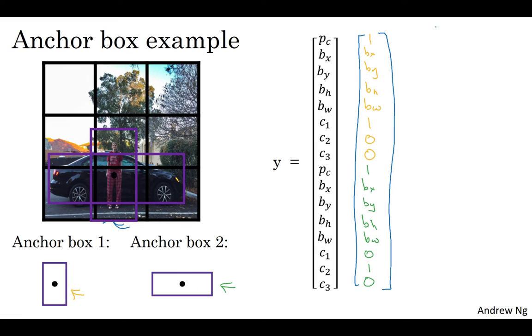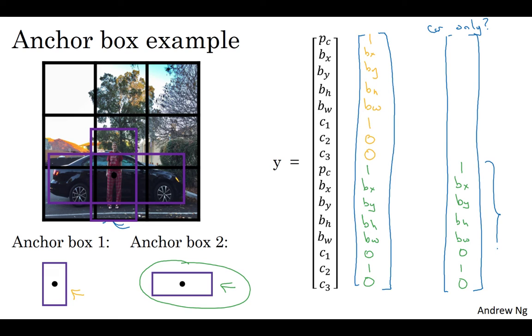Now, what if this grid cell only had a car and had no pedestrian? If it only had a car, then assuming that the shape of the bounding box around the car is still more similar to anchor box two, then the target label Y would still be the same for the anchor box two component. And for the part of the vector corresponding to anchor box one, what you do is you just say there is no object there, so PC is zero, and then the rest of these would be don't cares.